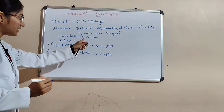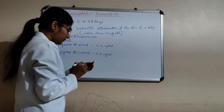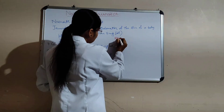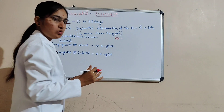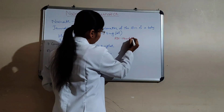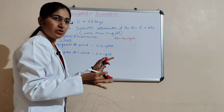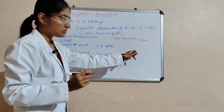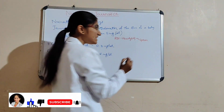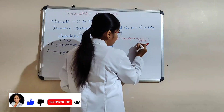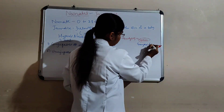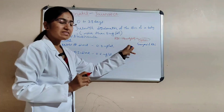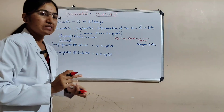Here, bilirubin comes from RBCs. The RBC is going to break down through a process called hemolysis. RBCs break down via hemolysis in the spleen. That is why the spleen is called the graveyard of RBCs.